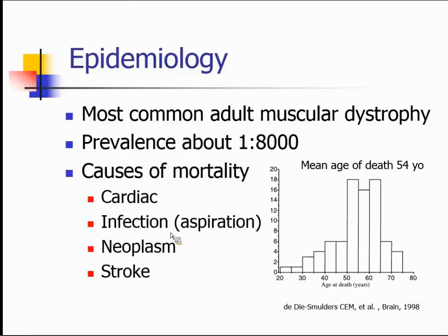Myotonic dystrophy type one is the most common adult muscular dystrophy with a prevalence of about 1 in 8,000, so it's not uncommon. It's a disease with increased mortality — a preliminary study from the Netherlands by Smulders and colleagues looking at about 85 patients retrospectively found a mean age of death of about 44 years. Causes of mortality include cardiac causes, infection — in particular aspiration pneumonia as dysphagia advances — the esophageal muscles being two-thirds skeletal muscle are impacted. Neoplasm occurs at increased incidence, and because of cardiac issues, patients are more vulnerable to stroke.